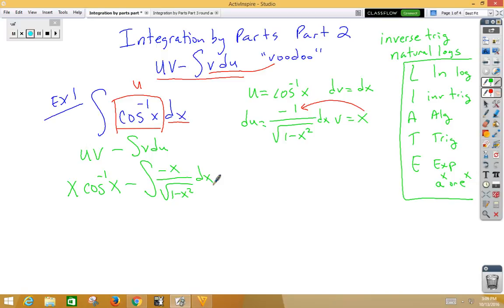We now ignore the front part of the problem because that part's done. We're simply integrating this back piece. That's a simple u sub. u, my inside function, is 1 minus x squared, du is negative 2x dx. So I'm going to need to multiply by a 2 on the inside, which means a 1 half on the outside.